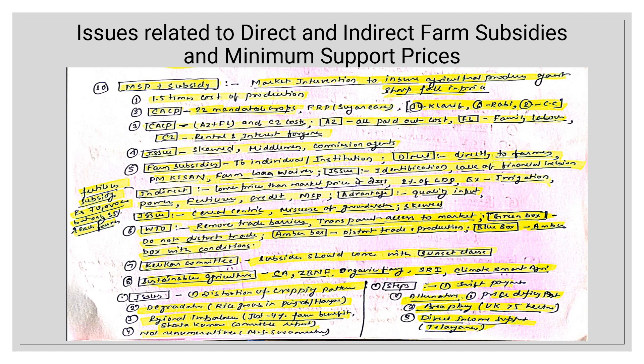CACP recommends MSP on the basis of a formula: A2 + FL + C2. A2 is all paid-out cost — whatever you have paid; FL is family labor cost for family members engaged in farming; and C2 is rental and interest foregone on own land — what rent or interest you would have earned. Currently, CACP recommends MSP for 22 mandatory crops — 14 kharif crops, 6 rabi crops, and 2 commercial crops. For sugarcane, FRP (Fair and Remunerative Price) is given.